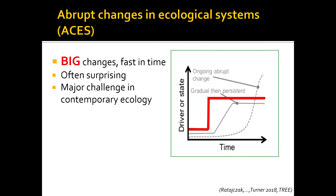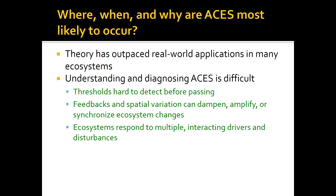They can be step functions, but they can also take a variety of different forms. They often surprise us because we often don't anticipate that they're coming, and I'd say this is a major challenge in contemporary ecology, but especially as we think about the effects of climate change. One of our big challenges is figuring out where, when, and why ACEs are most likely to occur.